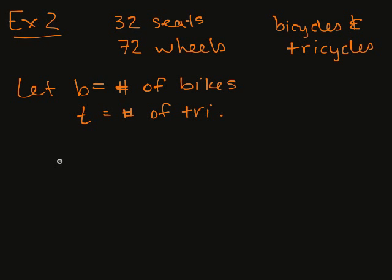And then I know b plus t has to equal 32 because that's the seats. Bicycles have two wheels. Tricycles have three. So altogether that makes 72. So how can I solve this?